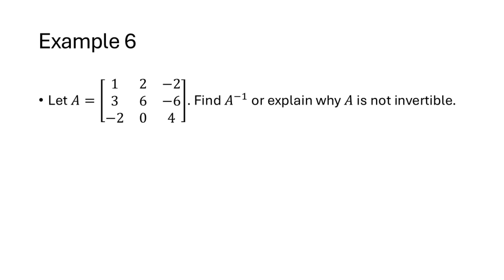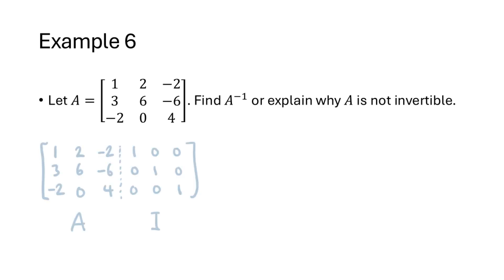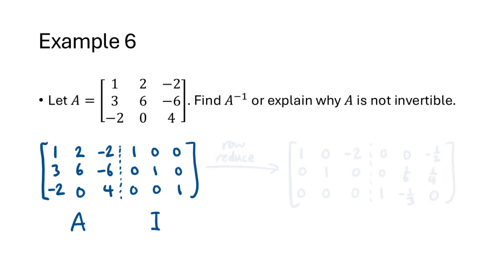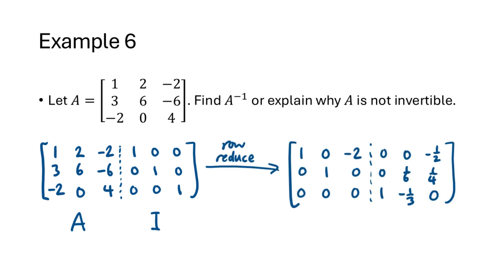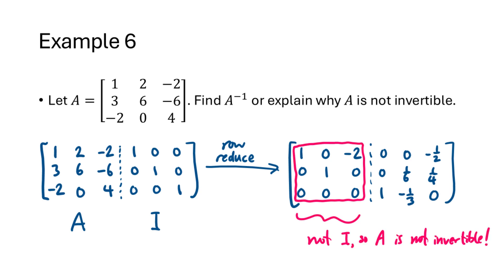What about a non-invertible matrix? We set up our super-augmented matrix with A on the left and I on the right, then row reduce. This time we don't get I in the left half, which means this matrix is not invertible. Don't pay attention to what appears in the right half — that's not the inverse of A, since A has no inverse in this case; it's just meaningless.